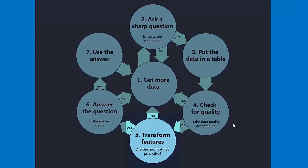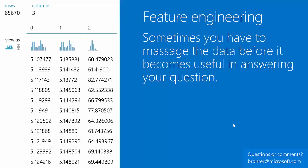The next step is to transform features — and ask: are the new features predictive? Sometimes the data you get needs a little massaging before it can help you answer your question. This is called feature engineering — a fancy word for taking the features you already have and doing something to them: change them, combine them, or break them down. Here's an example.